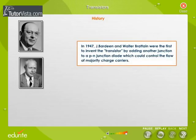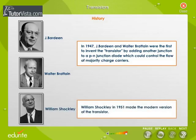In 1947, J. Bardeen and Walter Bratton were the first to invent the transistor by adding another junction to a PN junction diode which could control the flow of majority charge carriers. William Shockley in 1951 made the modern version of the transistor.